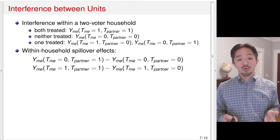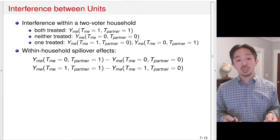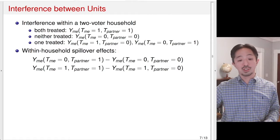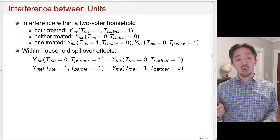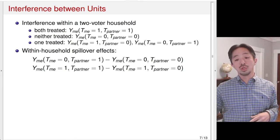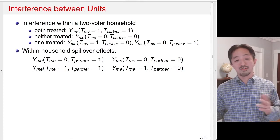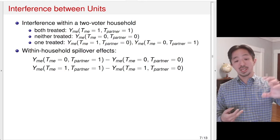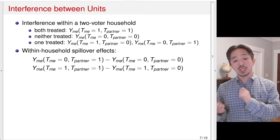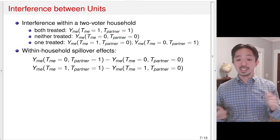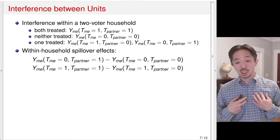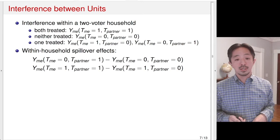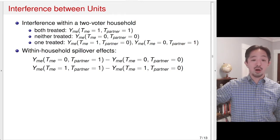We can think about the spillover effects. The first equation tells you: suppose I'm not treated — what is the impact of my partner getting treated on my outcome? Going from my partner being treated to my partner being in the control condition, what is the difference between the two potential outcomes? I could also hold my treatment constant at being treated, and then change the partner's treatment status and see how that affects my potential outcome. These define the spillover effects — within-household spillover effects — the impact of the partner's treatment status on my outcome.